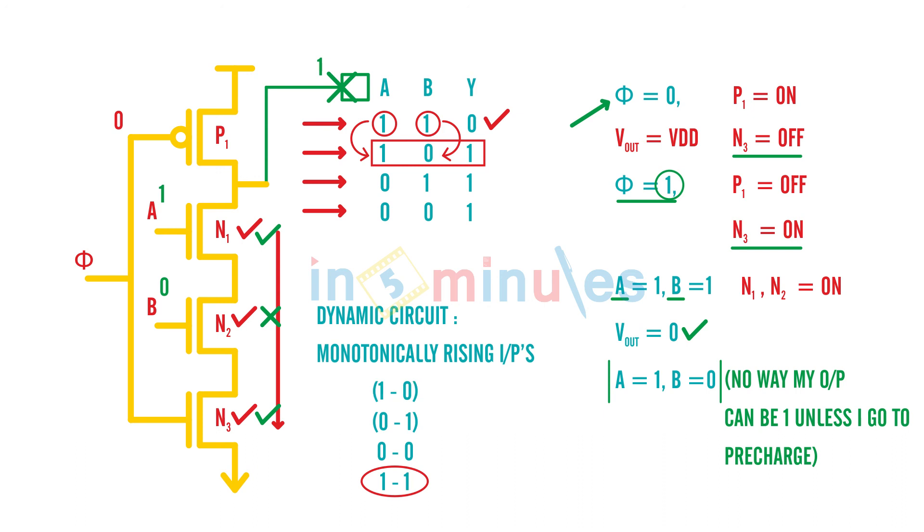And this is not allowed. So the input has to be monotonically rising. It means if initially the input was 0, it can go to 0. If it was 0, it can go to 1. If it was 1, it can go to 1. If it is 1, it cannot go to 0. And that's the major drawback of dynamic circuits, that the inputs have to be monotonically rising. If not, you see that the functionality is not achieved correctly. Thank you and stay tuned.